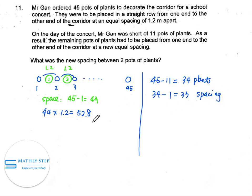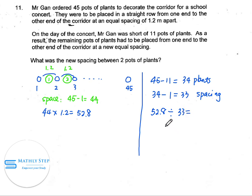The total length of the corridor is 52.8 meters, and there are 33 spacings. We can find the new spacing between two pots: it is 1.6 meters. So 1.6 meters is the new spacing between two pots of plants.